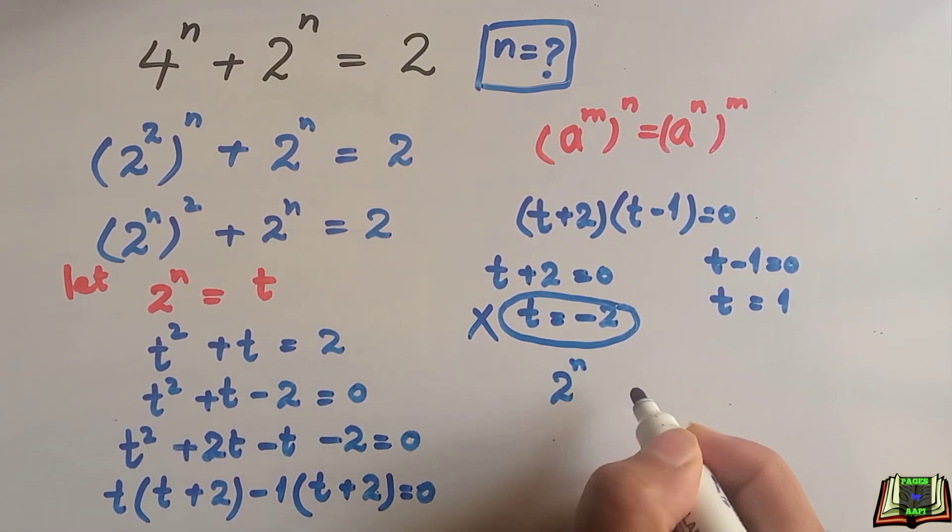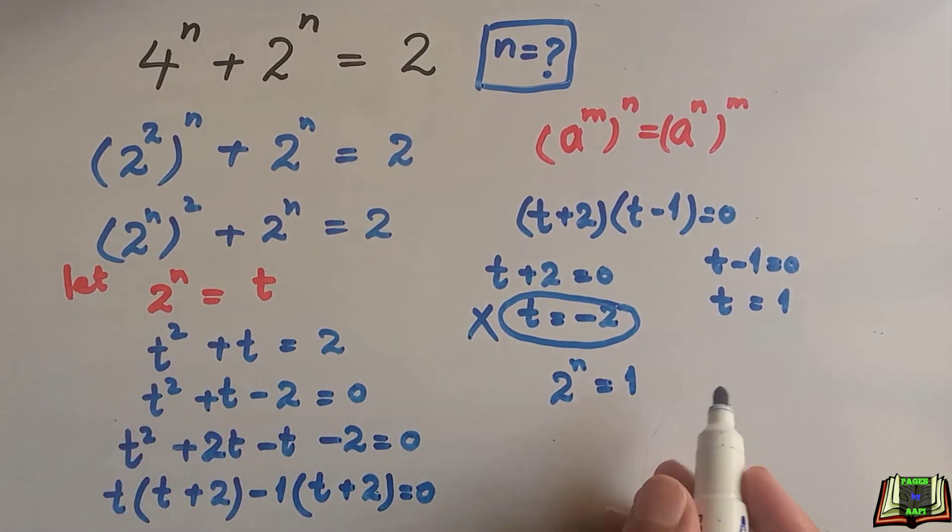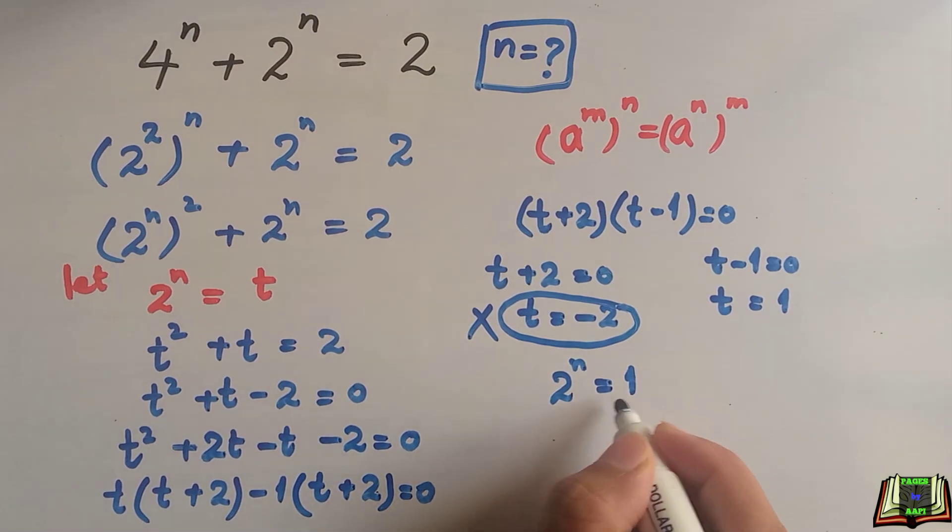Let's substitute back: 2 to the power n is equal to 1, as we let t as 2 to the power n. Here we are going to write this 1 in exponent form; we can write it as 2 to the power 0.